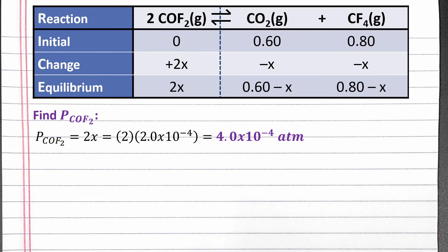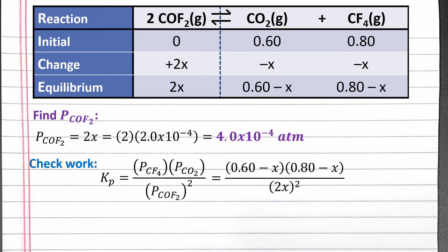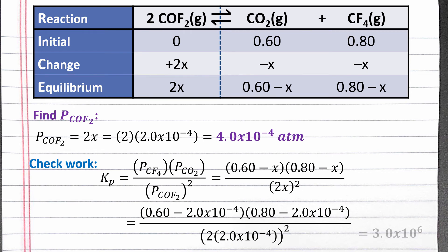To check that we solved for x correctly, we can plug the equilibrium row back into our equilibrium constant expression, substituting in the value of x that we calculated based on our simplifying assumptions. Completing this calculation, we should get 3.0 times 10 to the 6th. Since this is our original value of Kp, we've solved for x correctly.